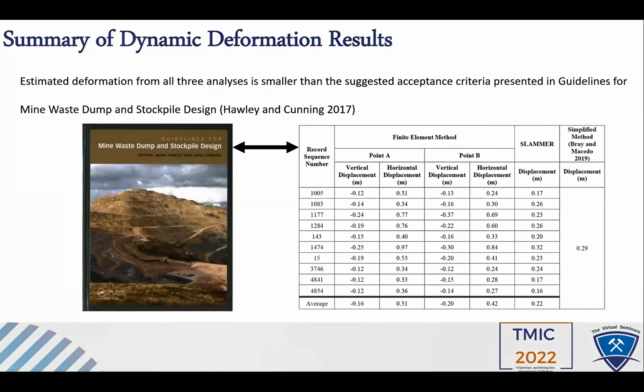The results from all three methods were compared to the acceptable deformation criteria from the literature — Hauli and Koning 2017. These results indicate that the performance of the analyzed waste dump slope meets the acceptable deformation criteria based on Hauli and Koning 2017.